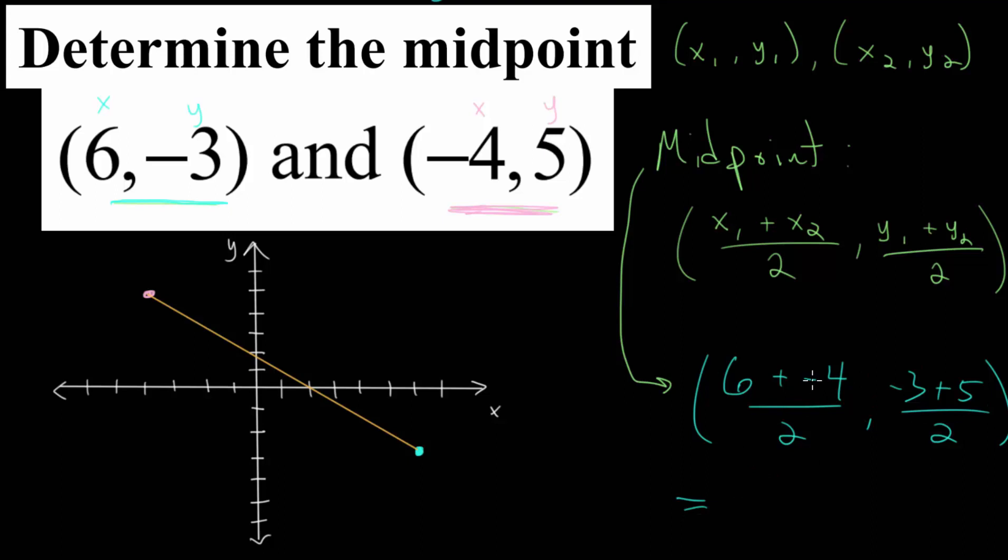And we can simplify. We have 6 plus negative 4, which is just 2, and we'll divide that by 2. Here we have minus 3 plus 5, which is 2, and we divide that by 2. And simplifying both of these, we just get 1, 1.